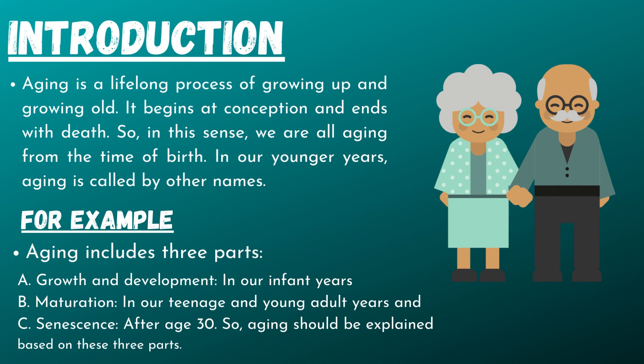In our younger years, aging is called by other names. For example, aging includes three parts: A. Growth and development in our infant years. B. Maturation in our teenage and young adult years. And C. Senescence after age 30.